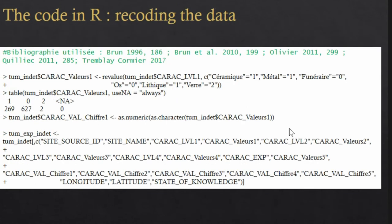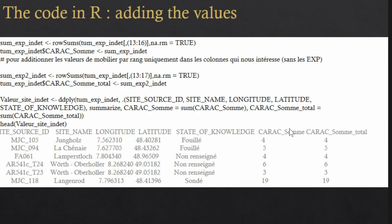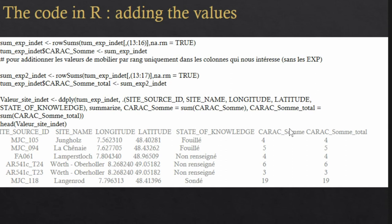In order to convert textual information into numerical values, we used the revalue function to attribute a numerical value for each characteristic in Archeogis. This operation was made easier by the ontology of the platform, because database authors have to use the same characteristics to describe the finds. Then we changed the values into numerical ones with the as.numeric function. To add the values, we first summed the five levels of characterization for each row of the databases by adding two columns — one with and one without the exceptional value in Archeogis. After that, we added these sums according to site ID, name, and localization to get the exceptional value for each individual site. Finally, for a more visual understanding, we used the mapview package to highlight the results on a map.